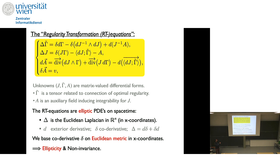It's really just a coordinate Laplacian on R^n — partial over partial x^1 through partial x^n — making all operators elliptic. The co-derivative delta is based on the Euclidean metric in X coordinates. That's the entire trick: basing the co-derivative on the Euclidean metric, which is possible because the connection transformation law involves a co-derivative that doesn't see the metric — only the exterior derivative appears — so you can freely introduce a Euclidean-based delta to make things elliptic.